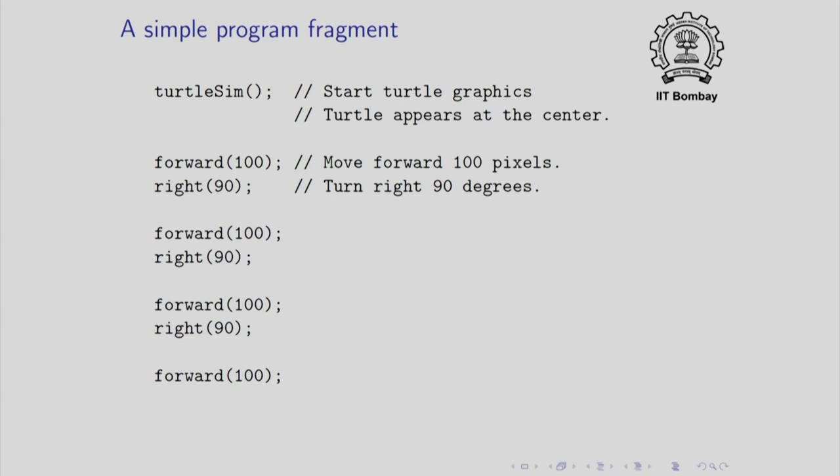Let me begin with a direct introduction. Here is a very simple program fragment which will draw something on the screen. The first command is turtle sim. This merely says start the turtle graphics functionality. This will cause a window to appear on the screen. And inside that, the turtle which is just a small triangle will appear at the center. Forward 100, as you might guess, will cause the turtle to move 100 pixels forward.